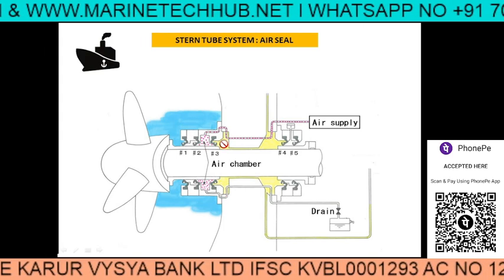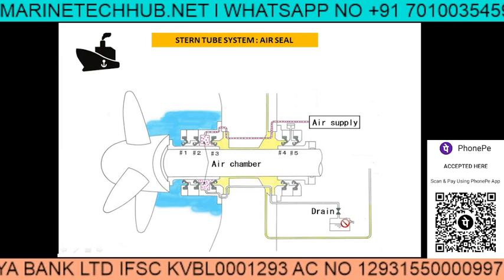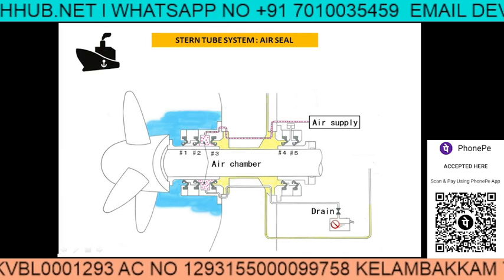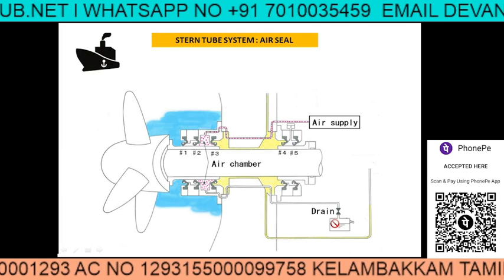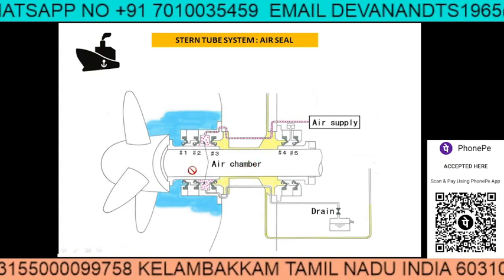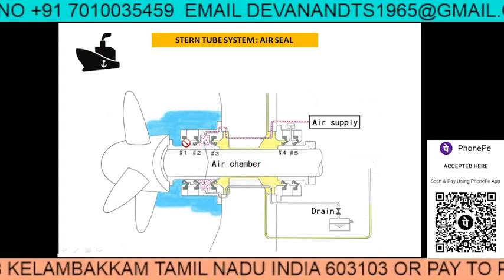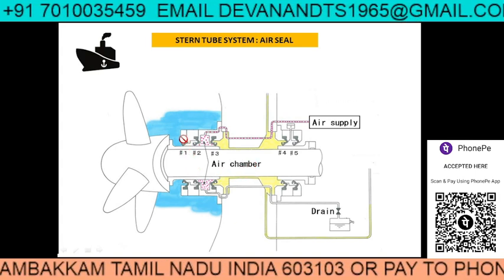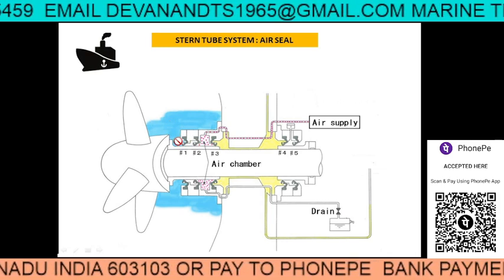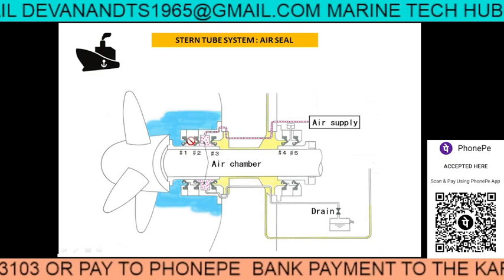And if there is leakage of oil, again this will come. We have a collection tank, a drain tank, which will show us the condition of the stern tube system. Normally, the shape of the sealing ring is like this — so if the first sealing ring breaks, the sea water will come here.